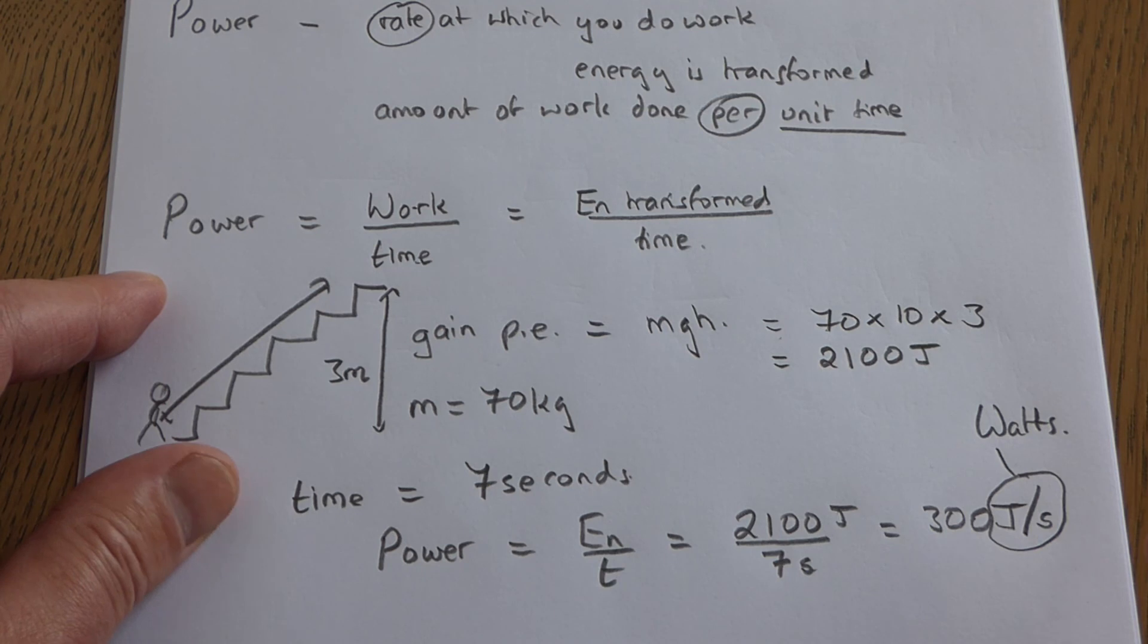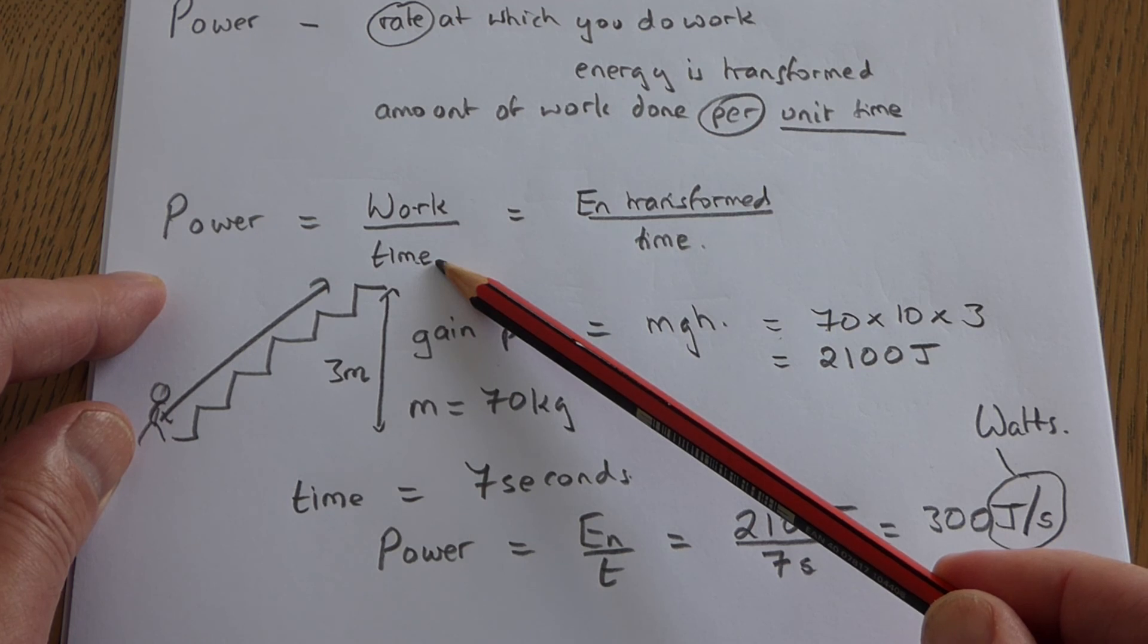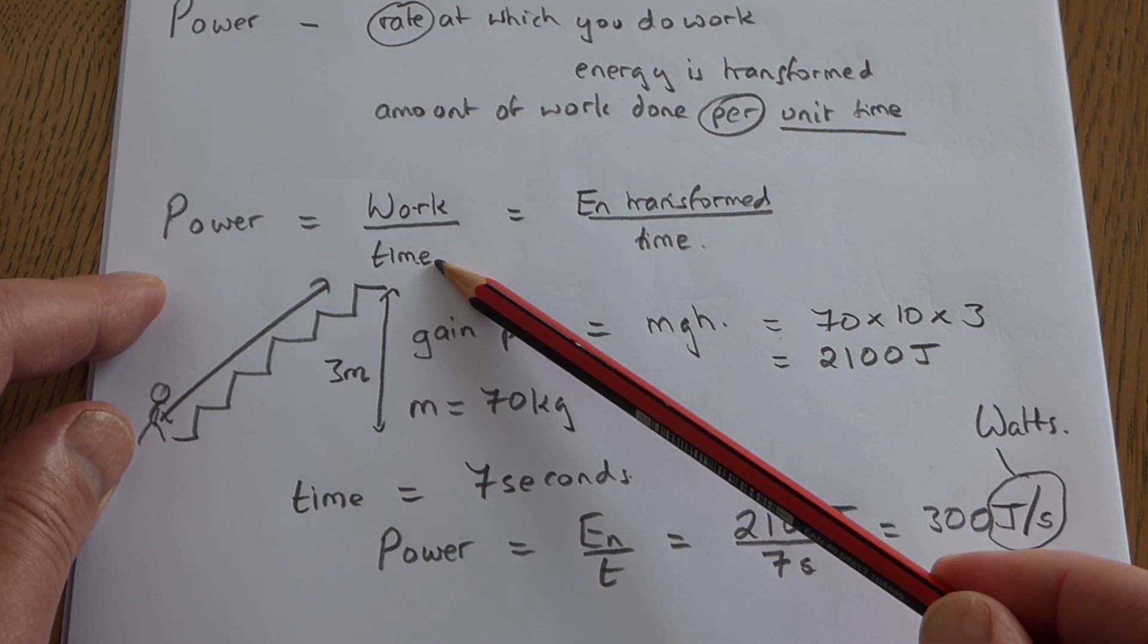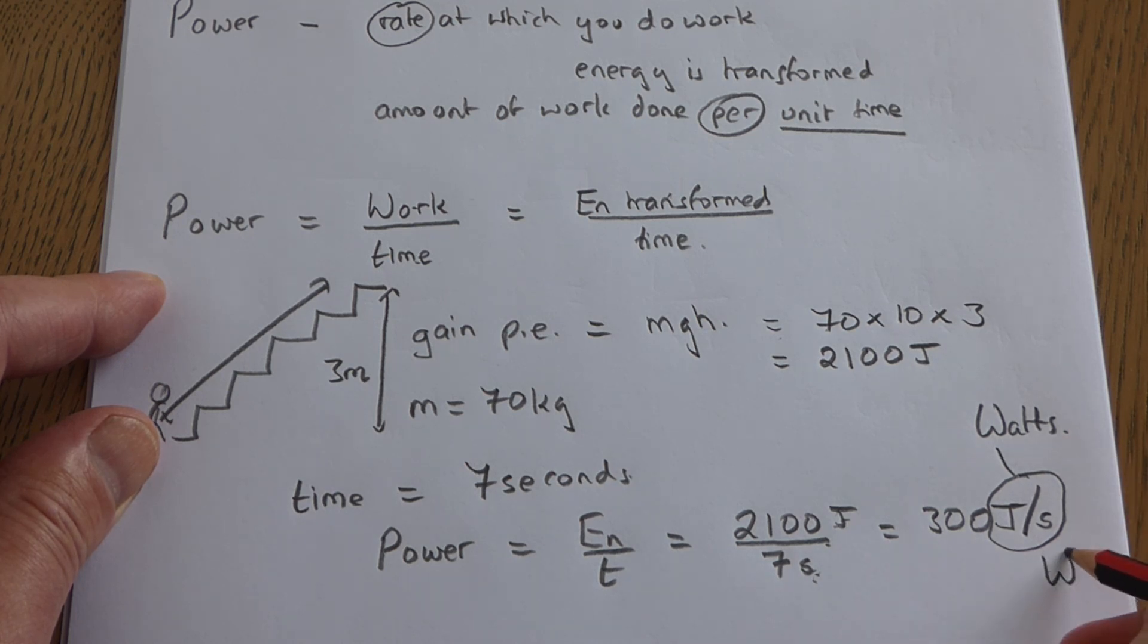So power is the rate at which you do work. It's the work you do divided by how long you took to do it. The units are therefore joules divided by seconds - joules per second - and they are known as watts, and you just simply write down a capital W for the watt.